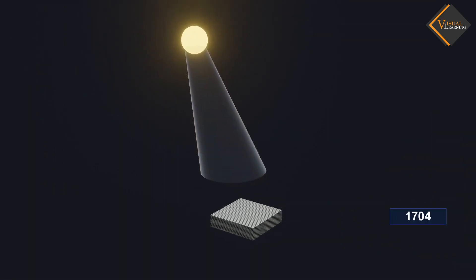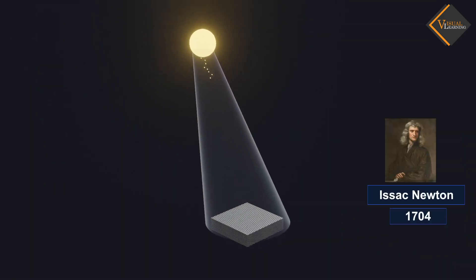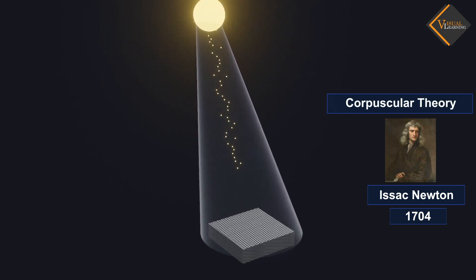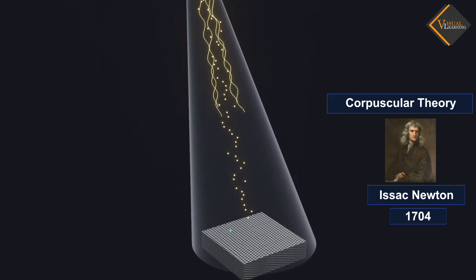In 1704, Isaac Newton formulated the corpuscular theory in which he explained that light has both wave and particle nature and the particles in light are called photons.